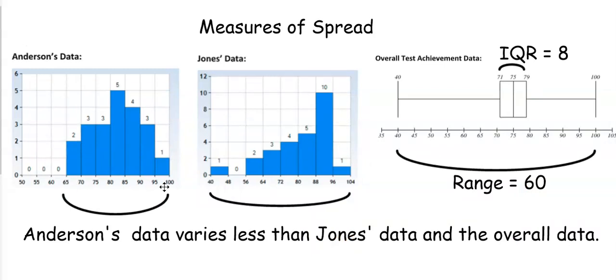For measures of spread, if we take a look at Anderson's data I'm just looking at the range here. I don't know exactly what the range is because all that I know is that we have two values between 65 and 69 and one value that's between 95 and 99. For Jones's data I can tell that the quiz scores are more spread out. For the box plot I can get the actual range because I have the maximum and minimum values so I know that the range is 60 and the interquartile range is 8. Anderson's data varies less than Jones's class data and the overall data so it is clustered closer together when compared to these other two.